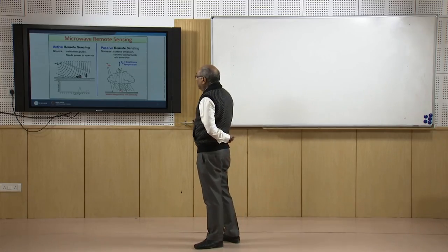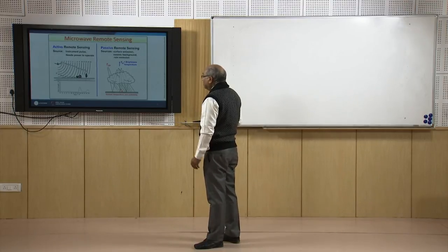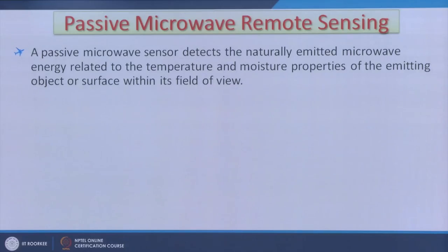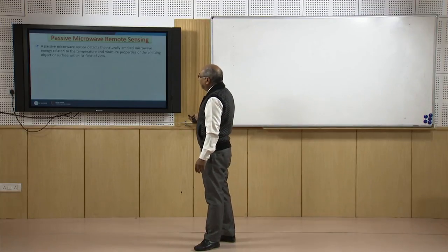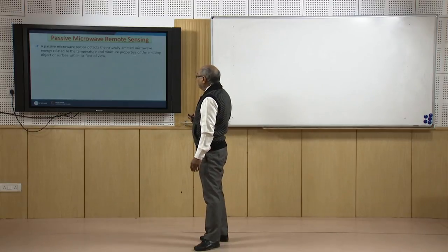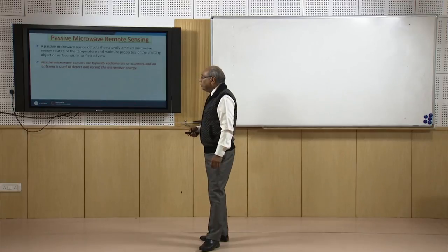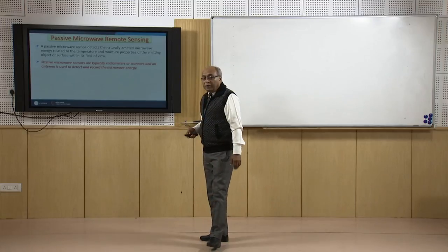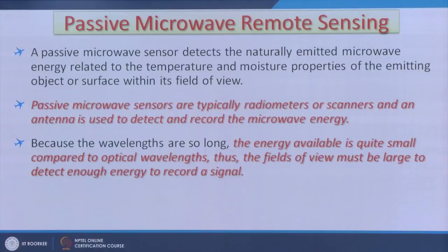In passive microwave, the illumination source is generally the sun or natural emissions and can present problems — if there are clouds, you have a problem. In passive microwave, the sensor detects naturally emitted microwave energy related to temperature and moisture properties of the emitting objects within the field of view. Passive microwave sensors are typically radiometers and scanners. However, this energy is so small that high-resolution passive microwave images cannot be generated easily.